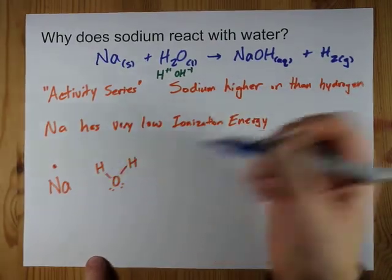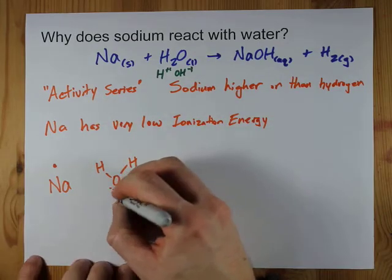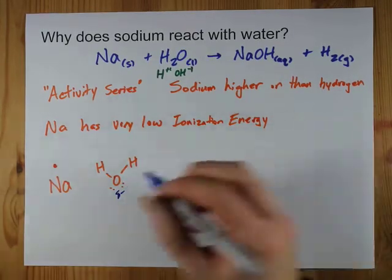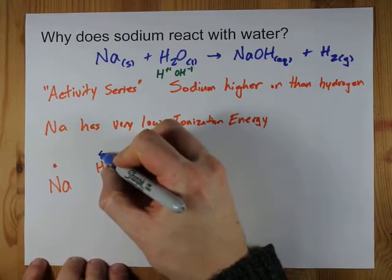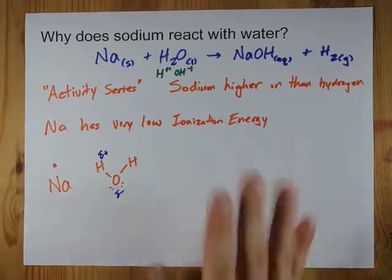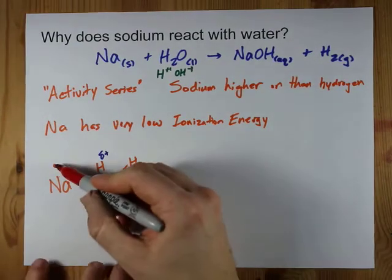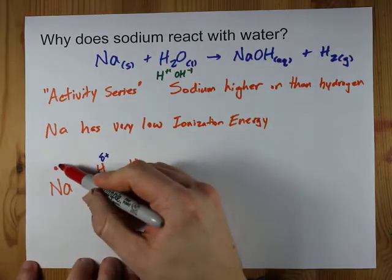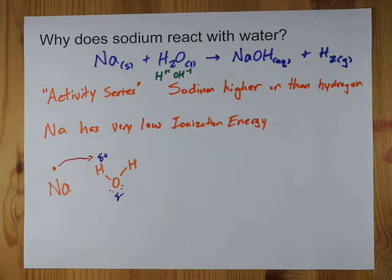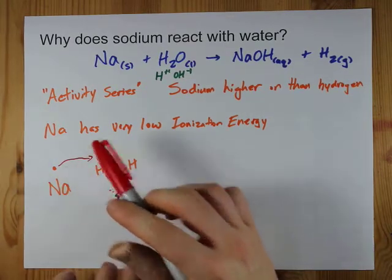There's an unequal sharing of those electrons. That gives this a very slightly negative charge, and that gives the hydrogen a very slightly positive charge. Isn't that attractive to a lone electron with nowhere to go? Well, that one electron is attracted to the slightly positive charge.